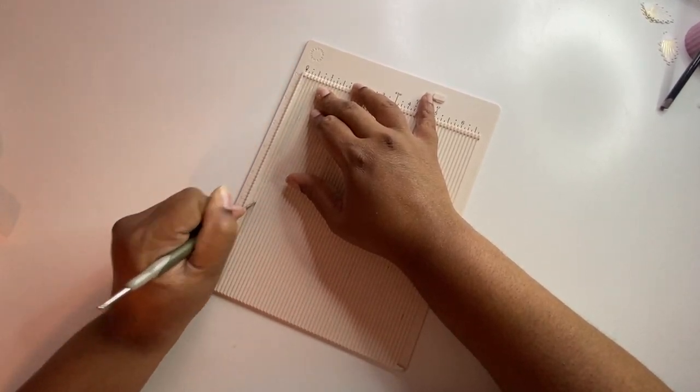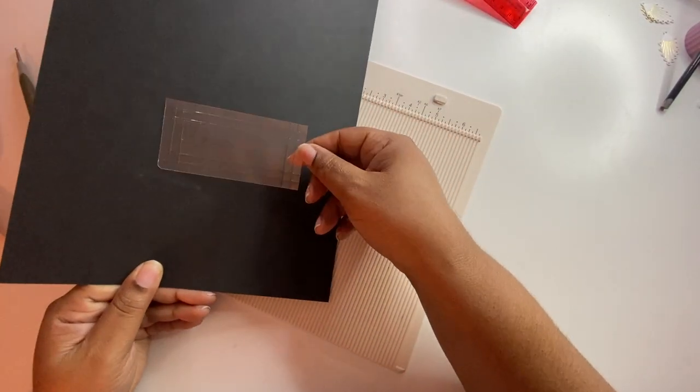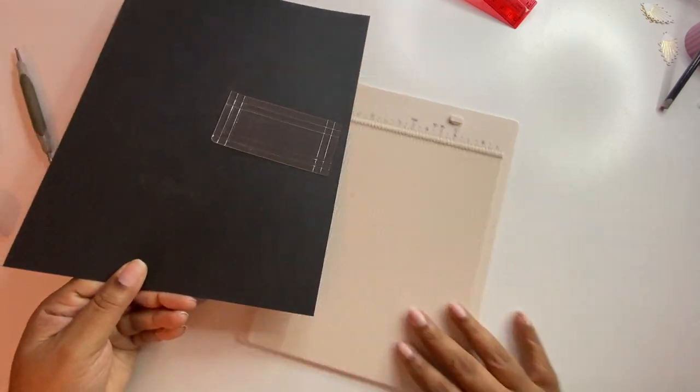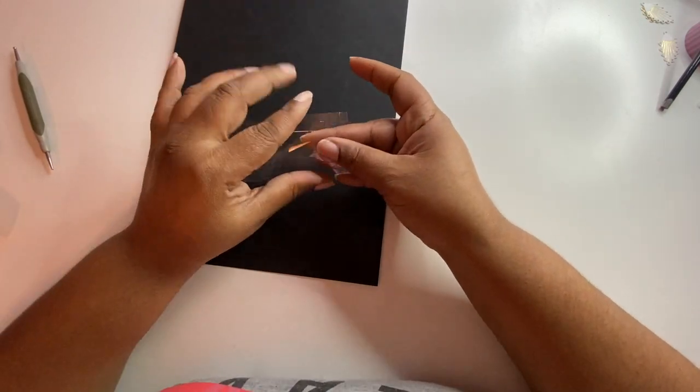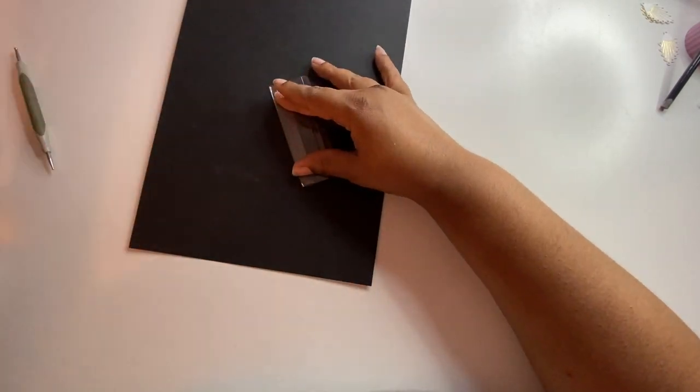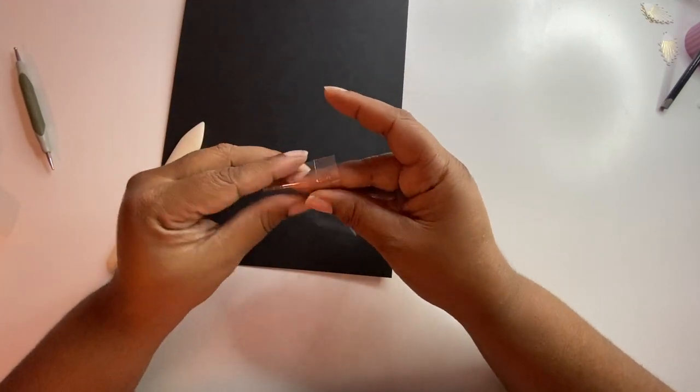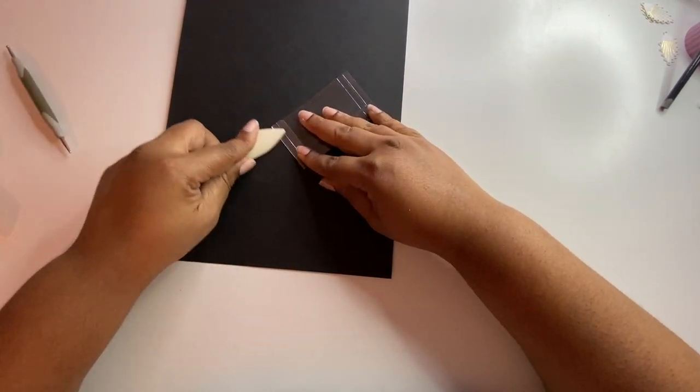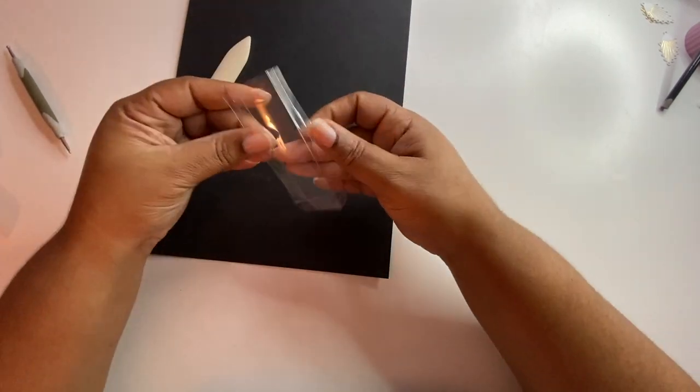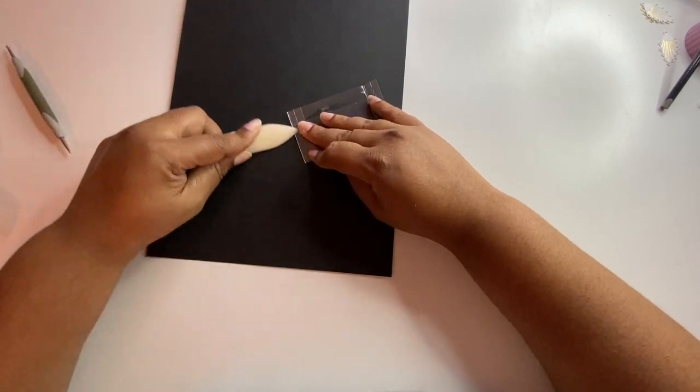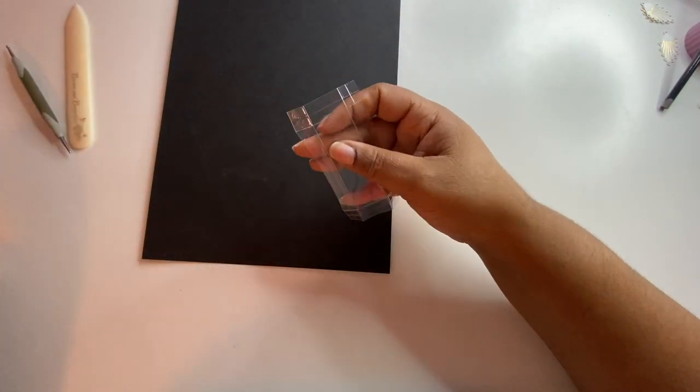So here I'm just continuing doing the scoring on all four sides, and again that was at a half an inch and at a quarter of an inch. I'm going to fold in the half inch score lines on all four sides and I'm going to use my bone folder to give it a really good press. You're really going to want something to do that with.